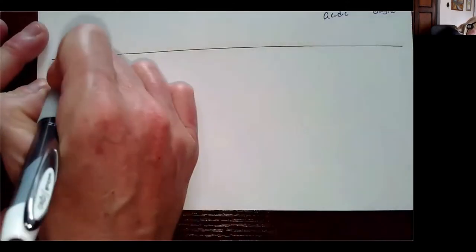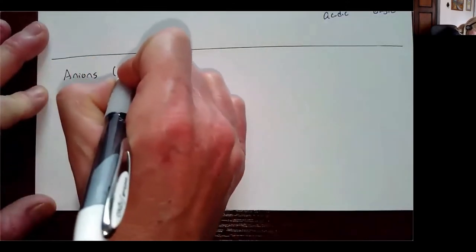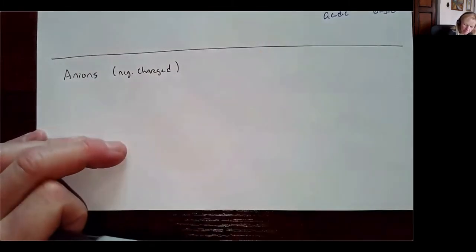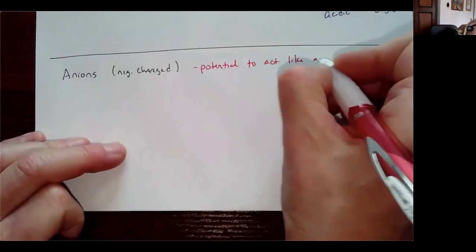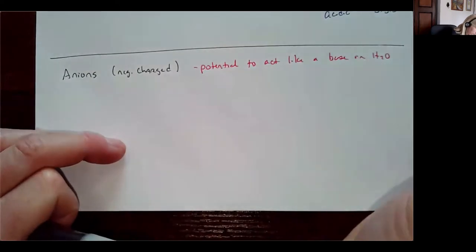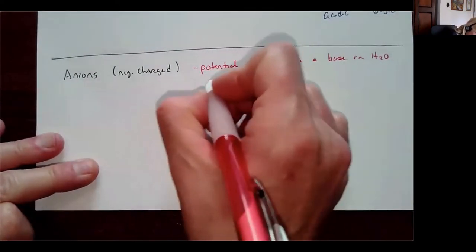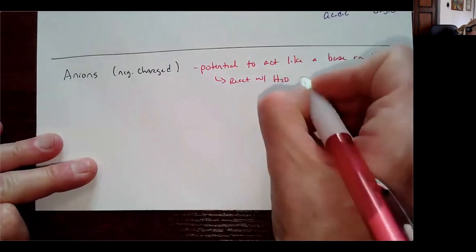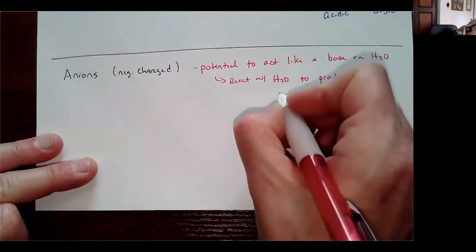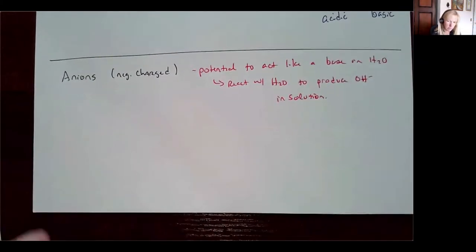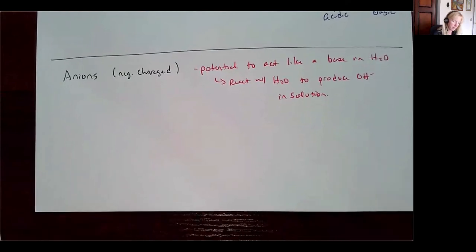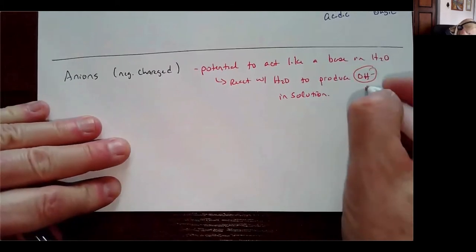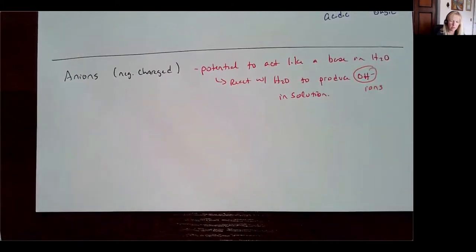Anions are negatively charged and have the potential to act like a base in water — not all of them, but some. That means they can react with water to produce hydroxide ion in solution. If an anion acts like a base, it's going to make that solution basic by producing hydroxide ions.